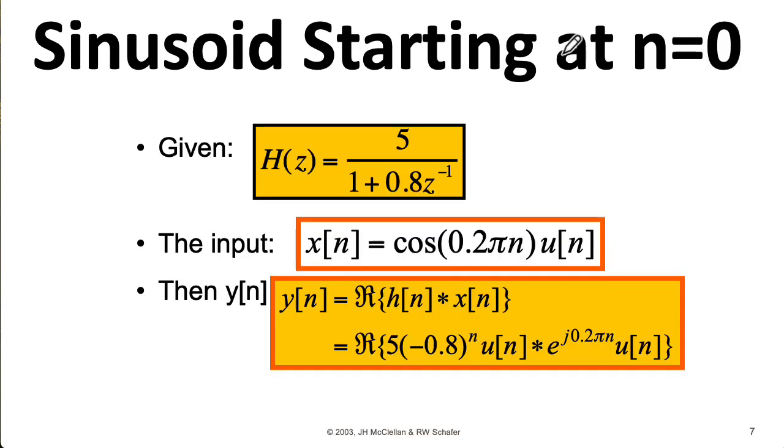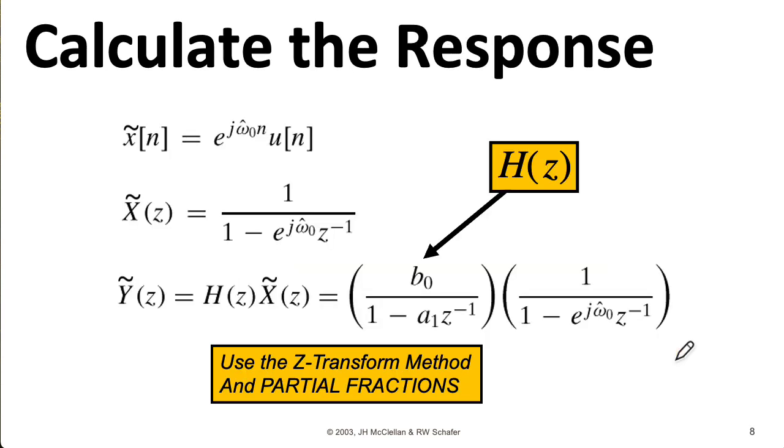Now it's time for our third case. We're going to put in cosine 0.2 pi n times u n. Here we're going to use a little trick. Because h is real valued, we can play a game where we put in the complex sinusoid e to the j 0.2 pi n, and then take the real part to get the cosine. So to compute this convolution, we'll multiply the Z-transforms of the functions. Here we are writing that first order transfer function in a more general form. Later we'll plug in 5 for v naught and minus 0.8 for a1. And we'll plug in 0.2 pi for omega naught hat.